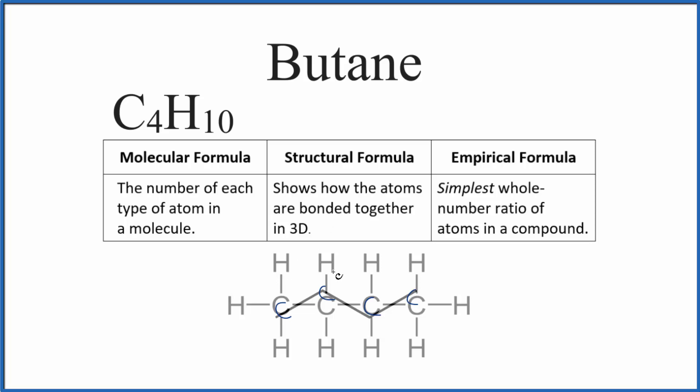That's the structural formula. The empirical formula for butane, that's the simplest whole number ratio of the atoms. So we can see we have a 4 to 10 ratio. But we could reduce that. We could divide each number by 2. That would give us 2 to 5. And the empirical formula for butane, that's C2H5.